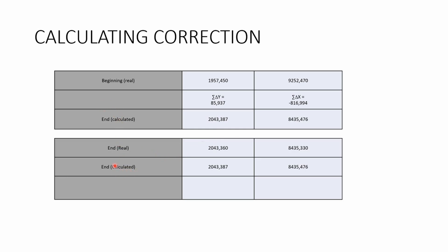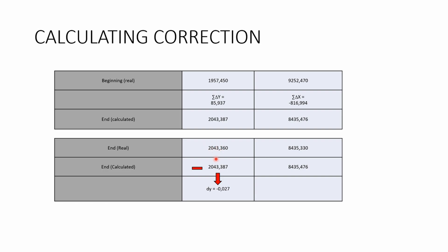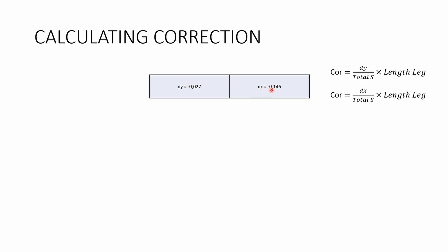We take the calculated end coordinates and subtract them from the real end coordinates. So we take the real Y minus the calculated Y to get a value we call dy, and the real X minus the calculated X to get dx. These two values — dy and dx — are very important for our corrections.